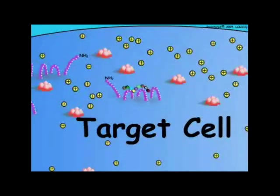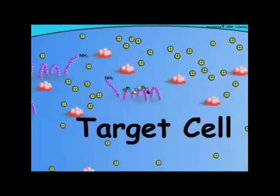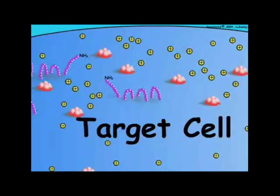The peptide hormone fits into the receptor like a key fits into a lock, and the hormonal message is conveyed to the receptor. The activated receptor then undergoes a conformational change that transfers the hormonal message into the cell. Once inside the cell, the message is converted, or transduced, into unique chemicals referred to as second messengers.